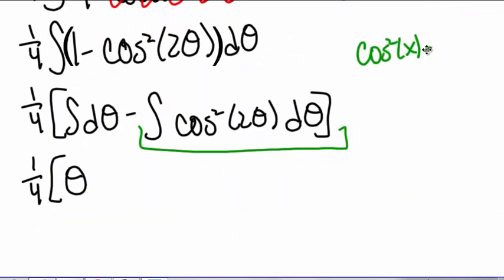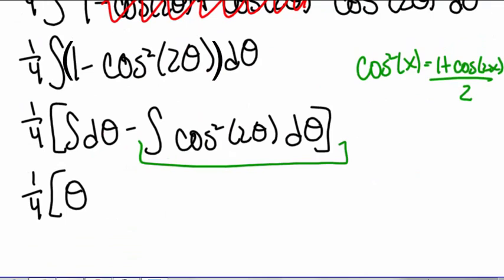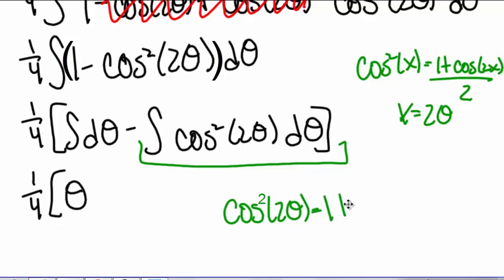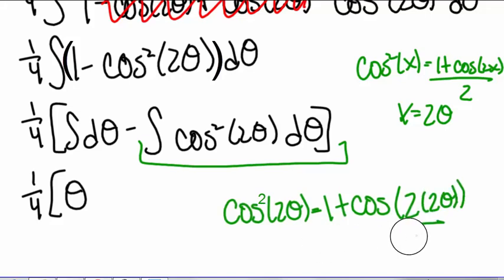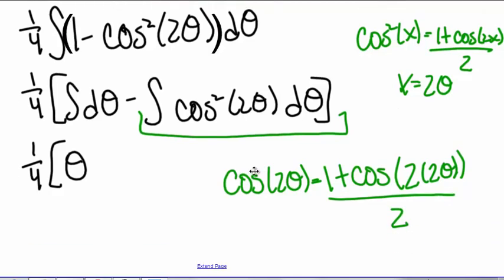In this case our x is 2θ. So if we think about it that way, if 2θ is x, then we can write cosine squared of 2θ as (1 plus cosine of 2 times 2θ) divided by 2. That tells us that cosine squared of 2θ equals (1 plus cosine of 4θ) all divided by 2. Let's see if that helps us with our integration.